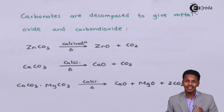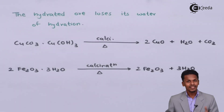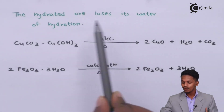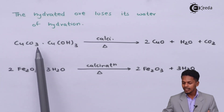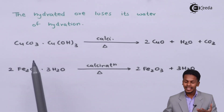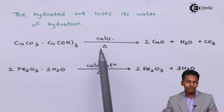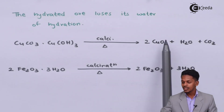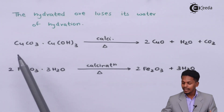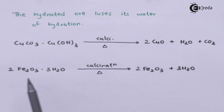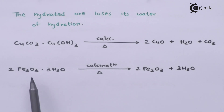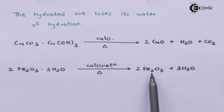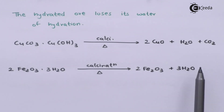Calcination can also remove other impurities — specifically, hydrated ores lose their water of hydration. For example, malachite Cu₂(OH)₂CO₃, when undergoing calcination, gives CuO along with H₂O and CO₂ as byproducts. Similarly, limonite, that is 2Fe₂O₃·3H₂O, when undergoing calcination at high temperature, is converted into Fe₂O₃ plus 3 moles of H₂O.